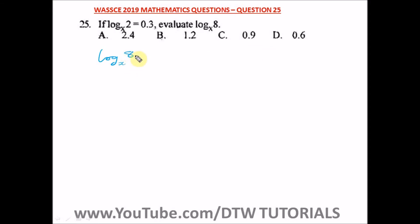We can simplify this - 8 can be written as 2 raised to power 3. So we have log base x of 2 raised to the power of 3. We take this 3 to the side. Remember your logarithm simplification - we have 3 log 2 base x.